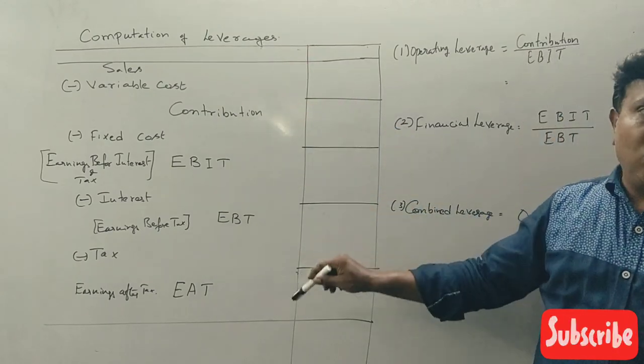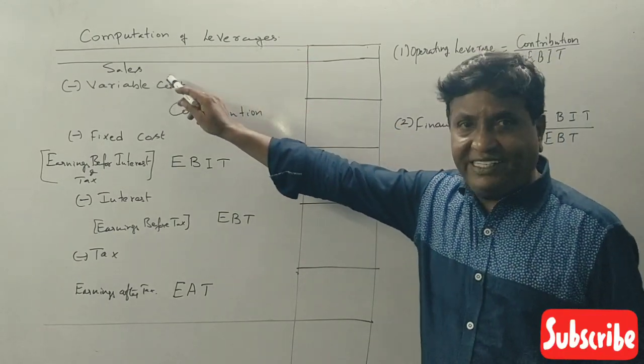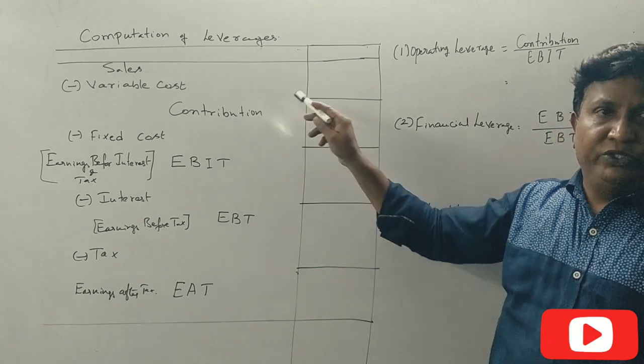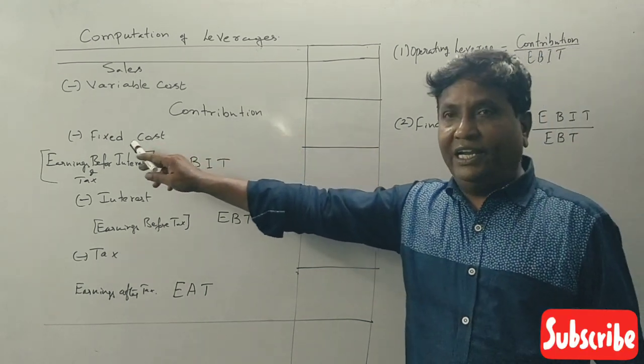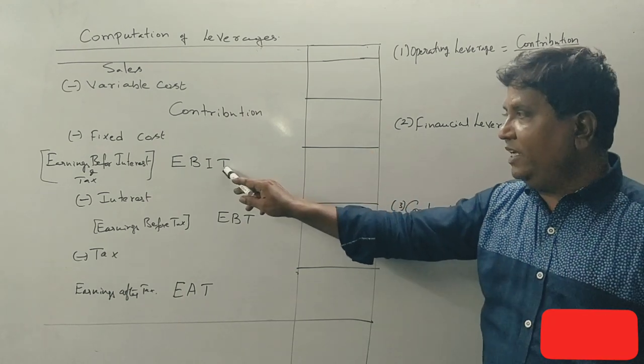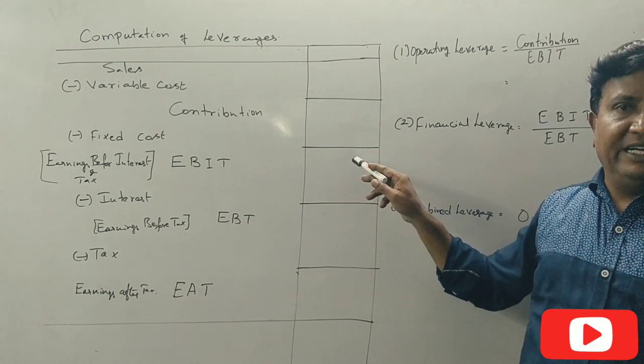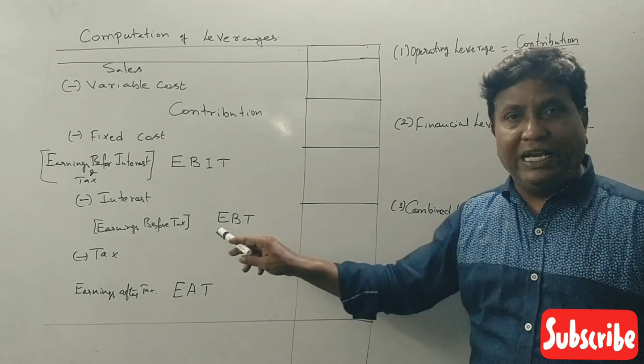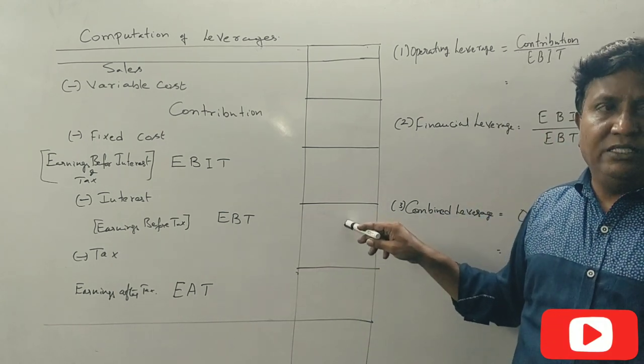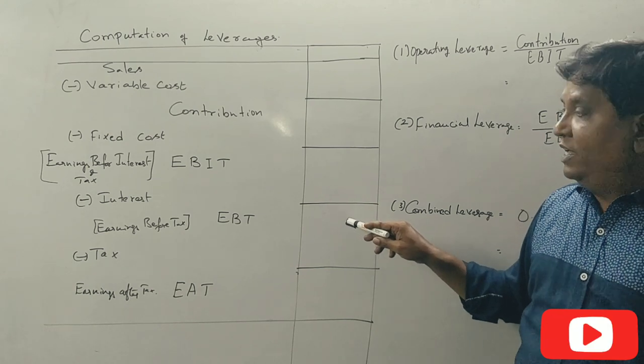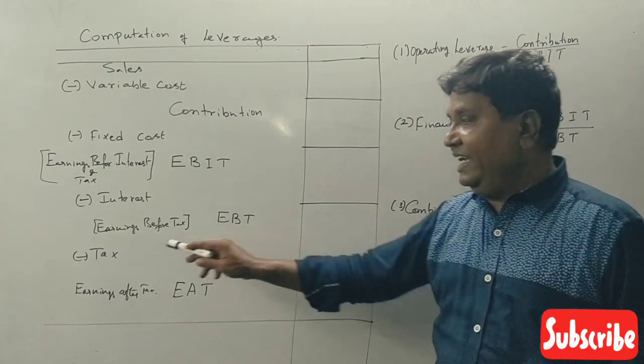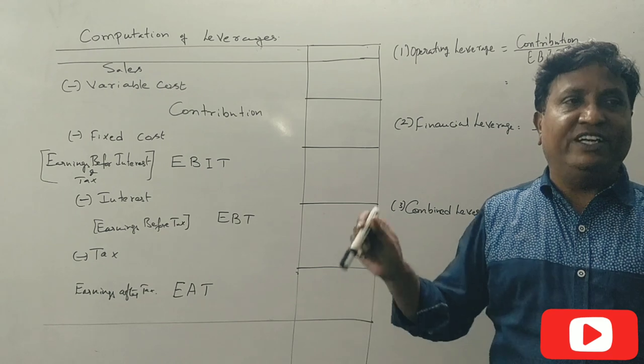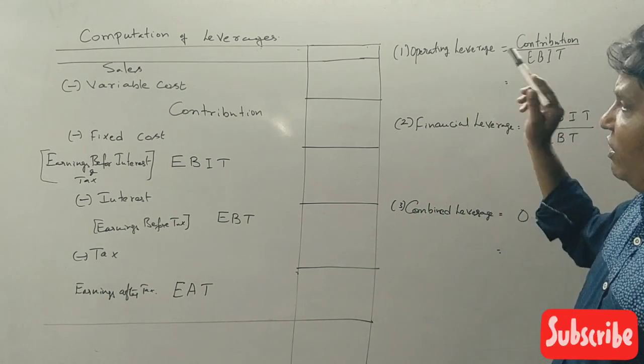Format: Sales minus variable cost equals contribution. Contribution minus fixed cost equals EBIT, earnings before interest and tax. EBIT minus interest equals EBT, earnings before tax. EBT minus tax equals EAT, earnings after tax. Now calculate leverages.